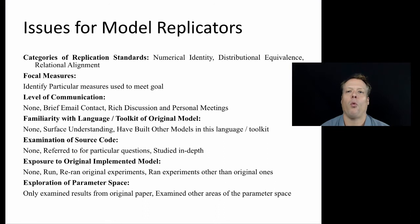I'm going to talk about what a model replicator should write about in order to show that they've successfully replicated and to provide evidence of that. One thing you need to think about is the category of the replication standard, which we just finished talking about: numerical identity, distributional equivalence, and relational alignment.